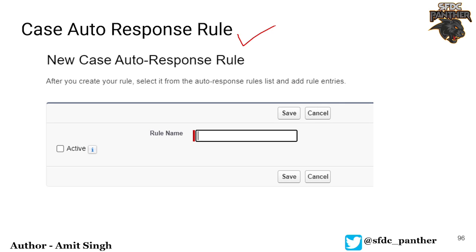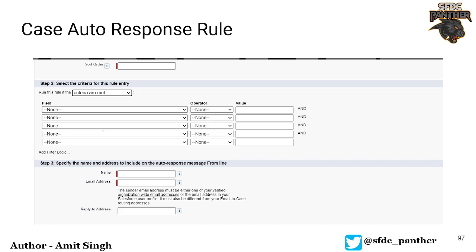Similarly, here in Salesforce, whenever we are getting a case — either from a community, web to case, email to case, or a user is creating a case on behalf of a customer — we can have a case auto response rule which is going to send an automatic response to the customer with their case number and all the details they provided. Like case assignment rules, there can be only one active auto response rule at a time, but it can have multiple entries inside it.